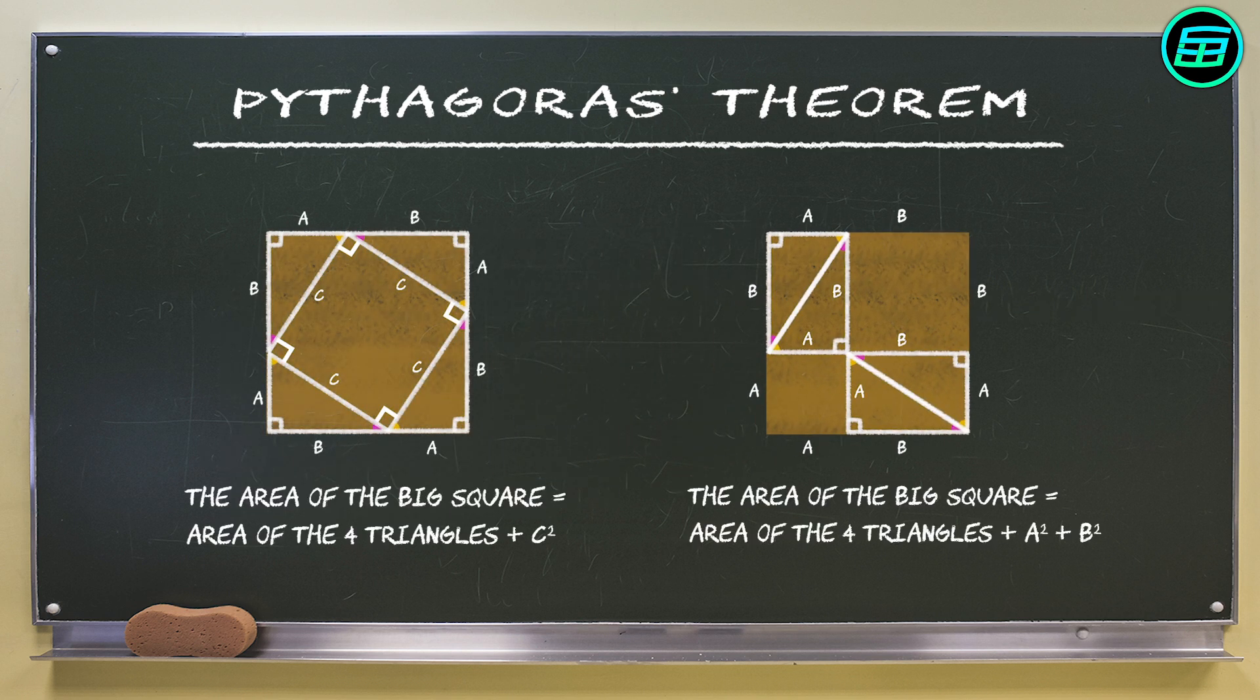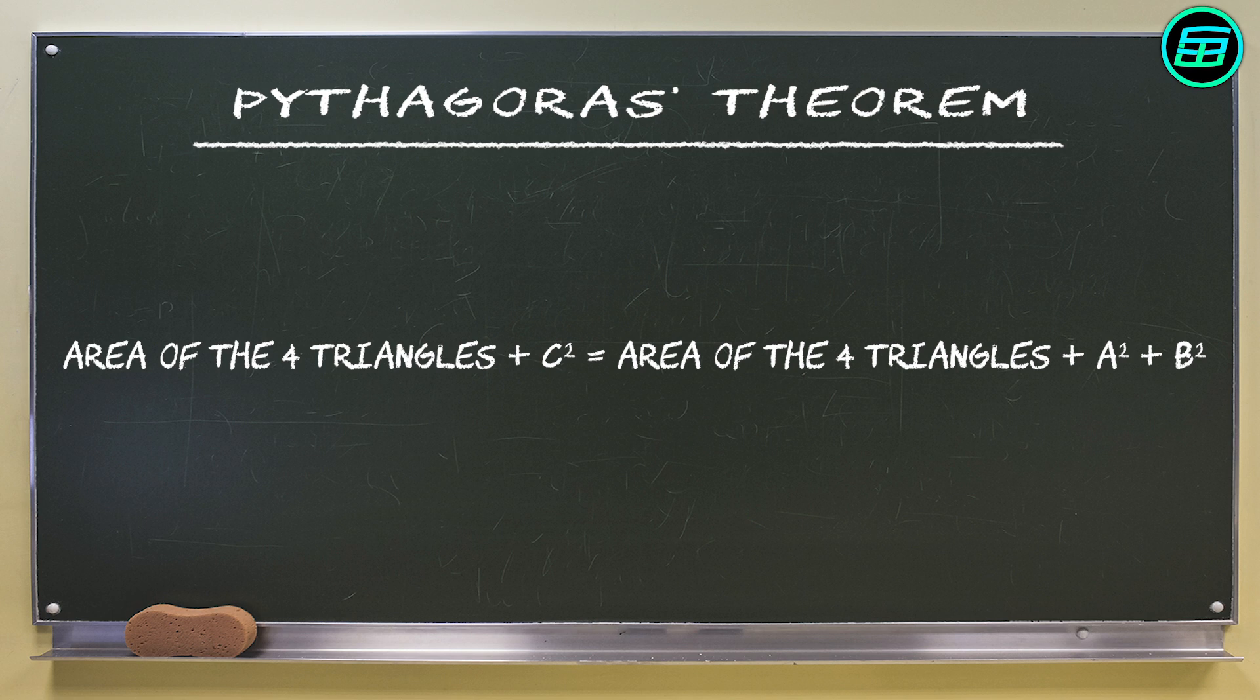We've found two different formulas for the area of the big square. Putting these equal to one another, the areas of the four triangles cancel and we're left with C squared equals A squared plus B squared.